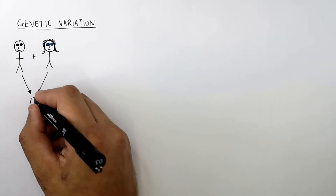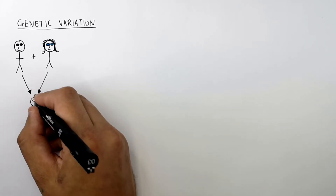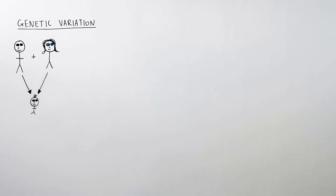So they have a baby together, and the baby has brown eyes. This is a characteristic that has been inherited from the father. So it is genetic variation, because the characteristic has been passed on from the father to the child via the genes.